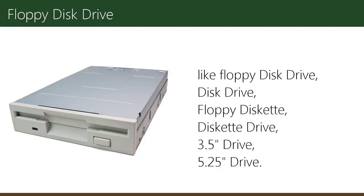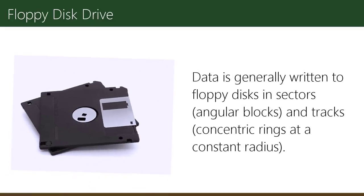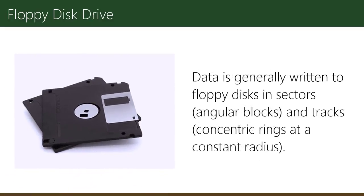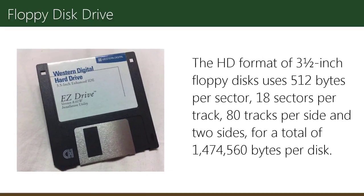Data is generally written to floppy disks in sectors (angular blocks) and tracks (concentric rings at a constant radius). For example, the HD format of a 3.5-inch floppy disk uses 512 bytes per sector, 18 sectors per track, 80 tracks per side, and two sides, for a total of 1,474,560 bytes per disk.